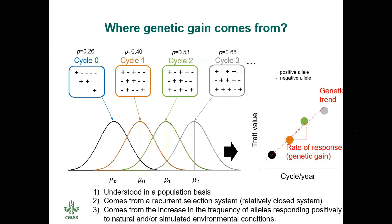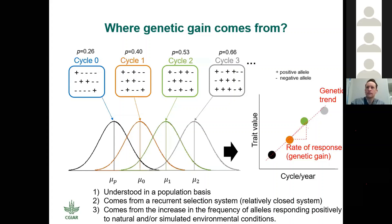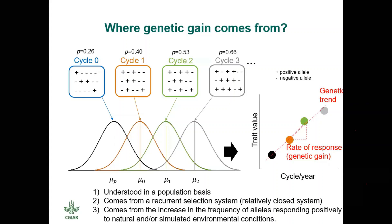Second, given the first condition, genetic gain also has to be understood in the context of a relatively closed system or a recurrence selection system. Something else to point out is that genetic gain really comes from increasing the frequency of alleles responding positively to a particular natural or simulated environmental condition. So when you see those distributions and you see that the frequency of positive alleles is increasing, that's where the genetic gain comes from. If you are not thinking in populations and not thinking on the frequency of alleles, what you are expressing might not actually be genetic gain.